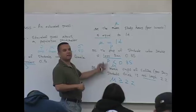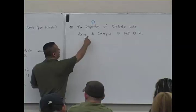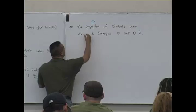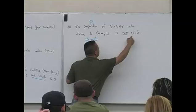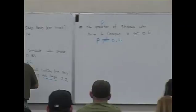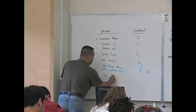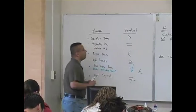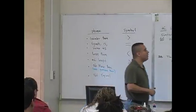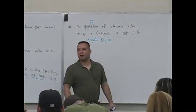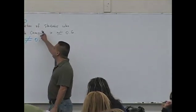The hardest part for students is translating hypothesis statements symbolically. First, identify the parameter, then read the key phrase to determine the symbol. For 'the proportion of students who drive to campus is not equal to 0.6,' it's p ≠ 0.6. 'Is not equal to' uses the ≠ symbol.